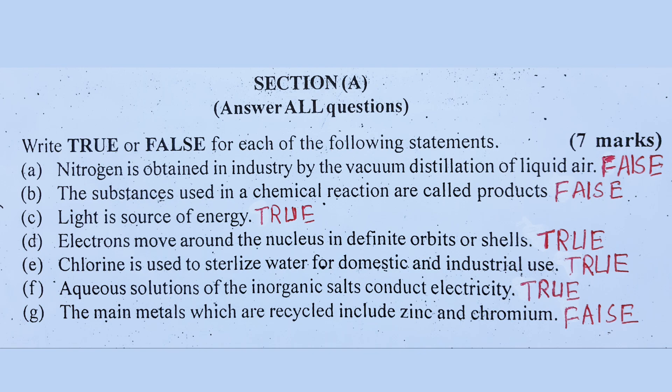Number B: The substances used in a chemical reaction are called products.